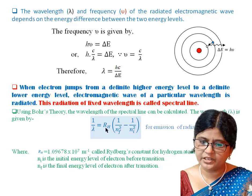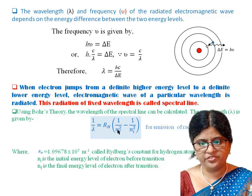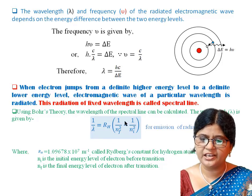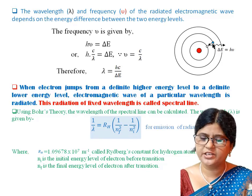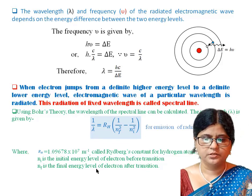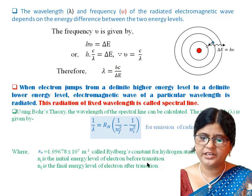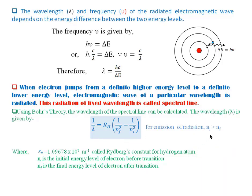From Bohr's theory, the wavelength equation is: 1/lambda = RH × (1/nf² − 1/ni²), where RH is the Rydberg constant. Here, nf is the final (lower) energy level after transition, and ni is the initial (higher) energy level before transition, where ni is always greater than nf.